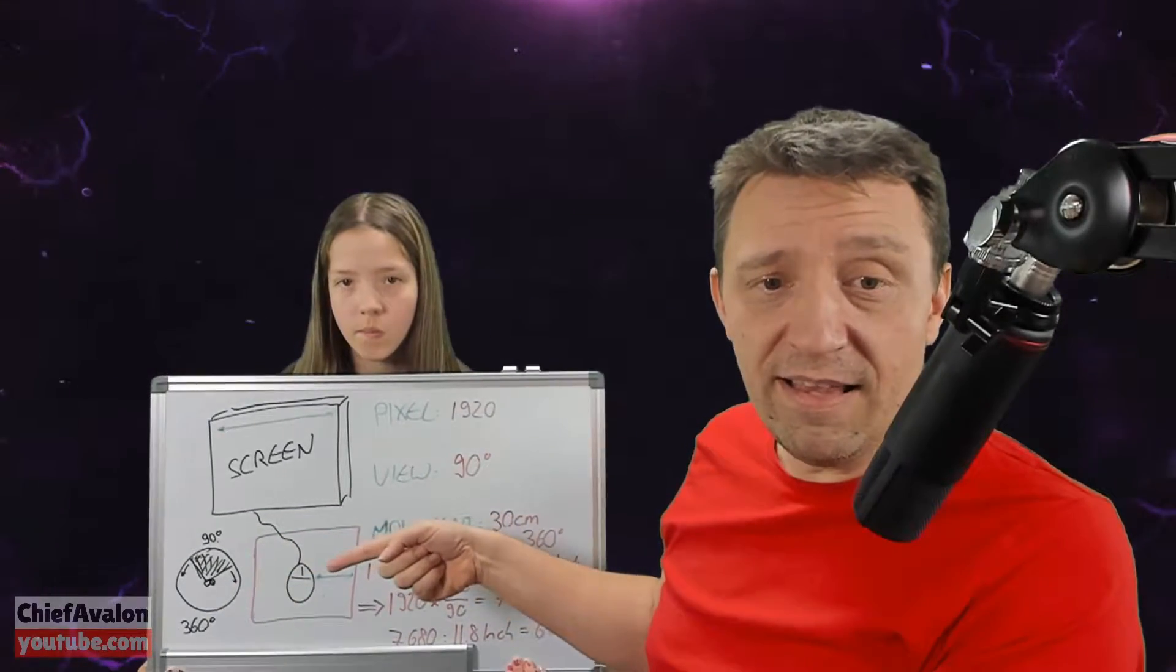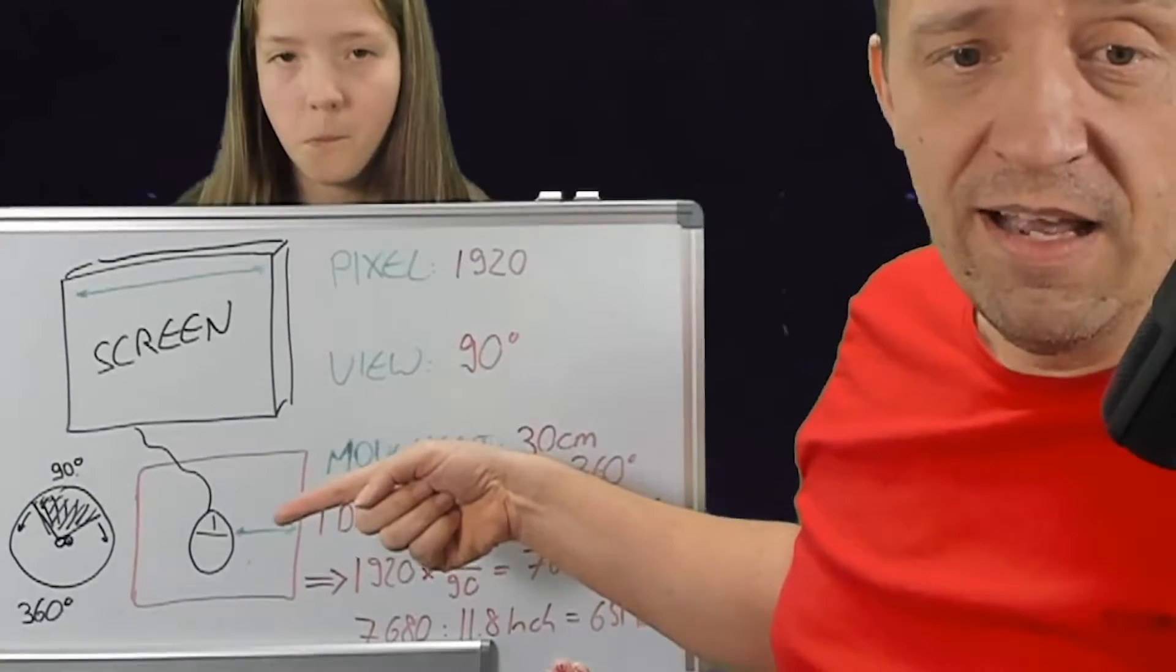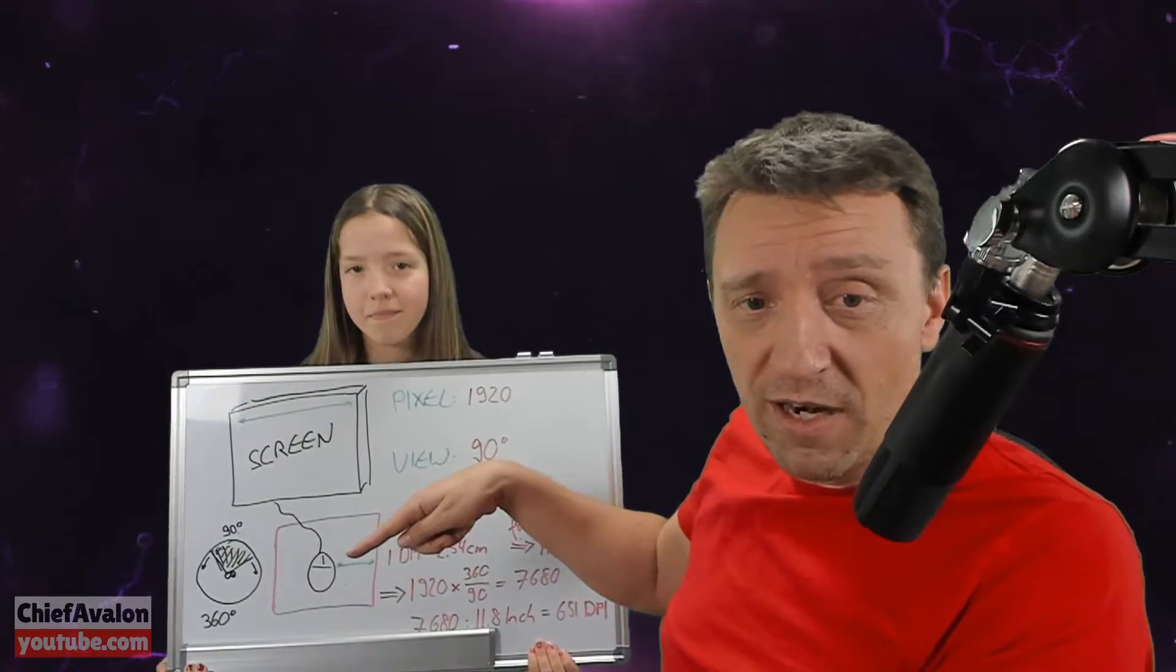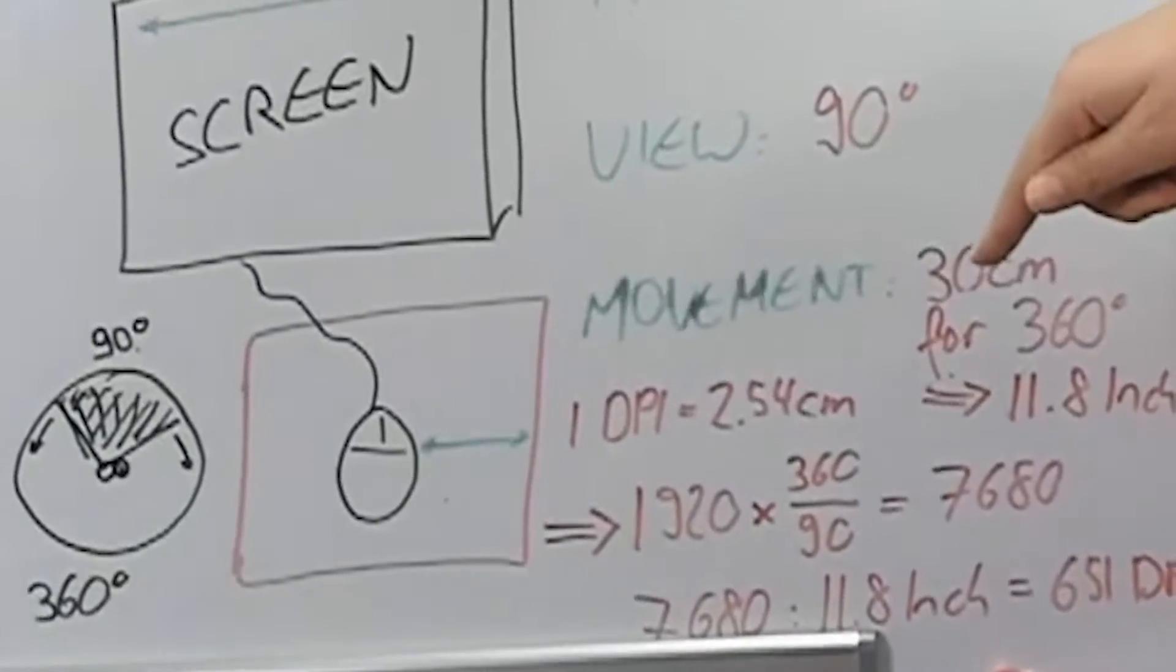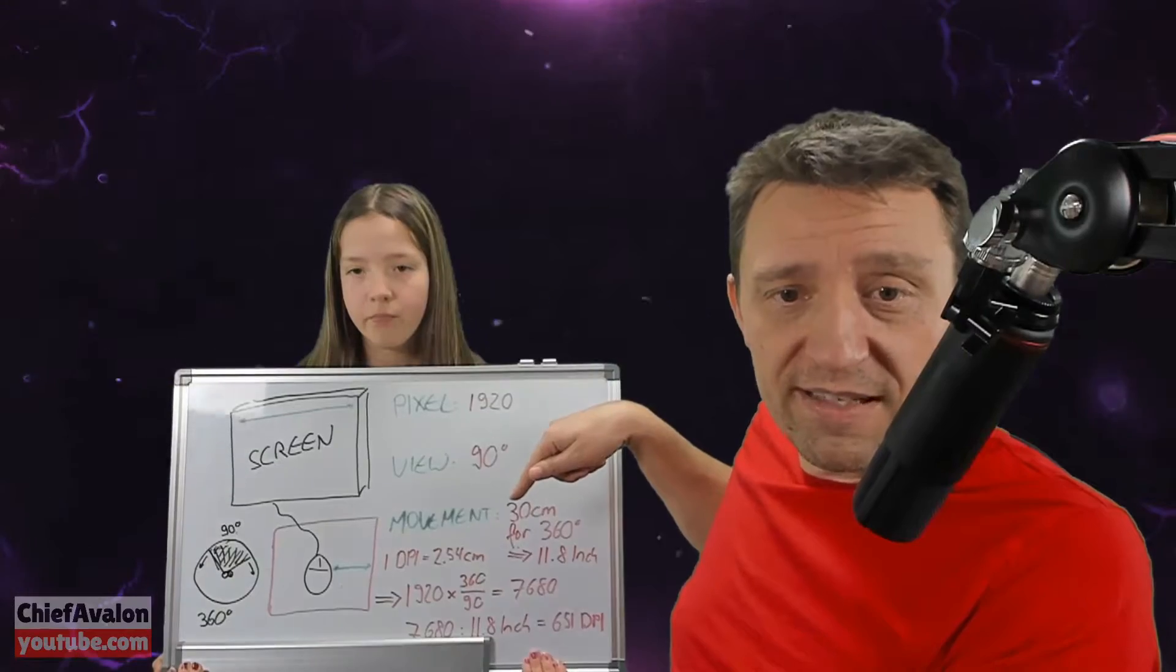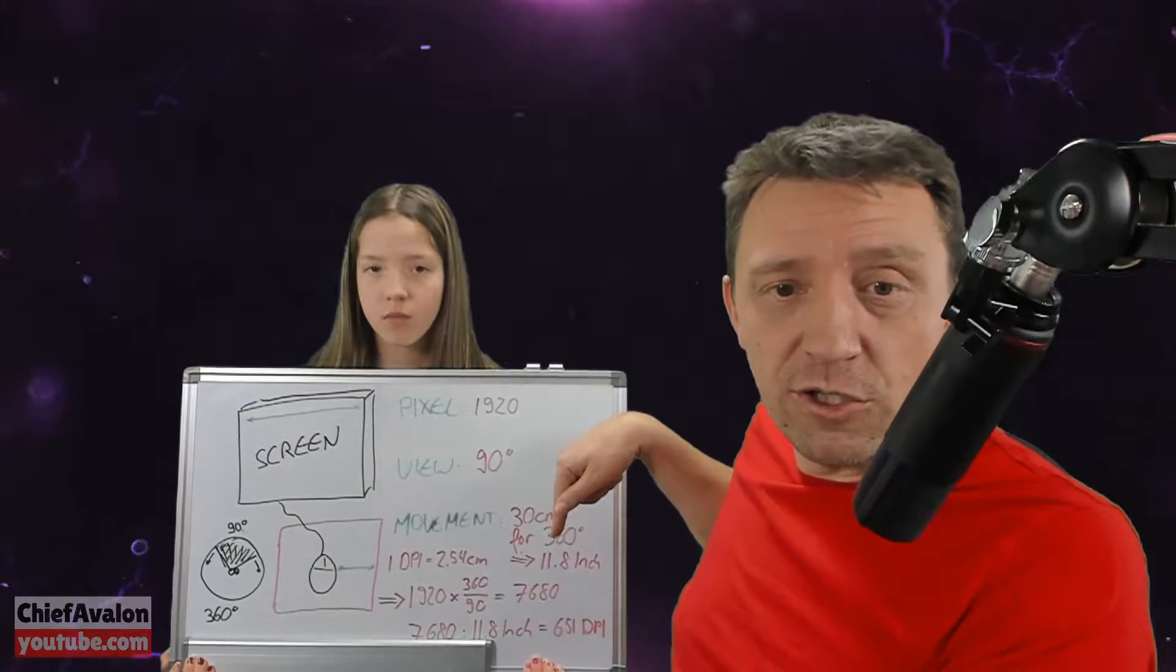Then there is the mouse, and I put it here with this green line. For this example, I assumed that you want to move the mouse 30 centimeters for a full 360 turn. 30 centimeters equals 11.8 inches.